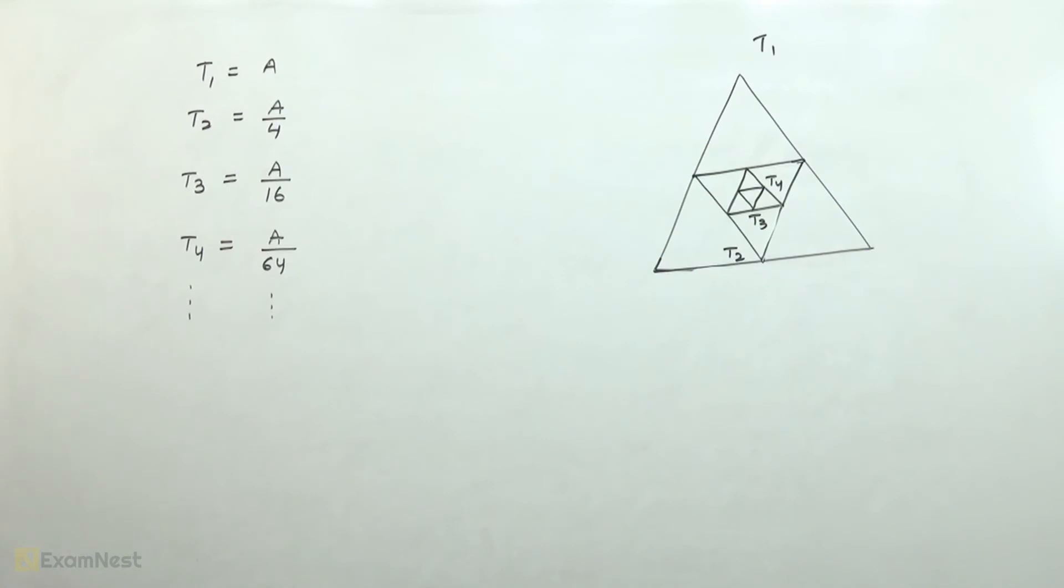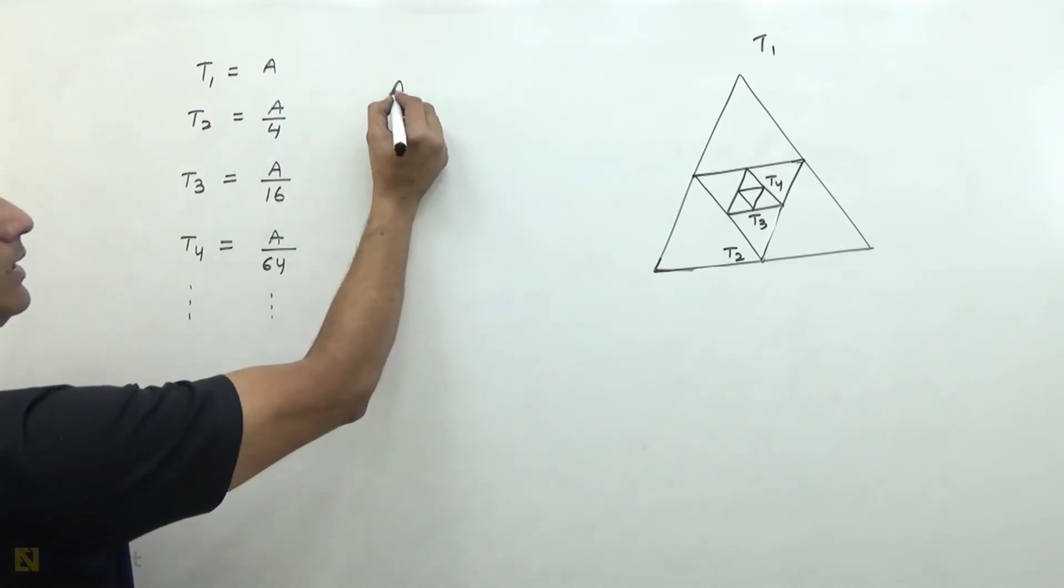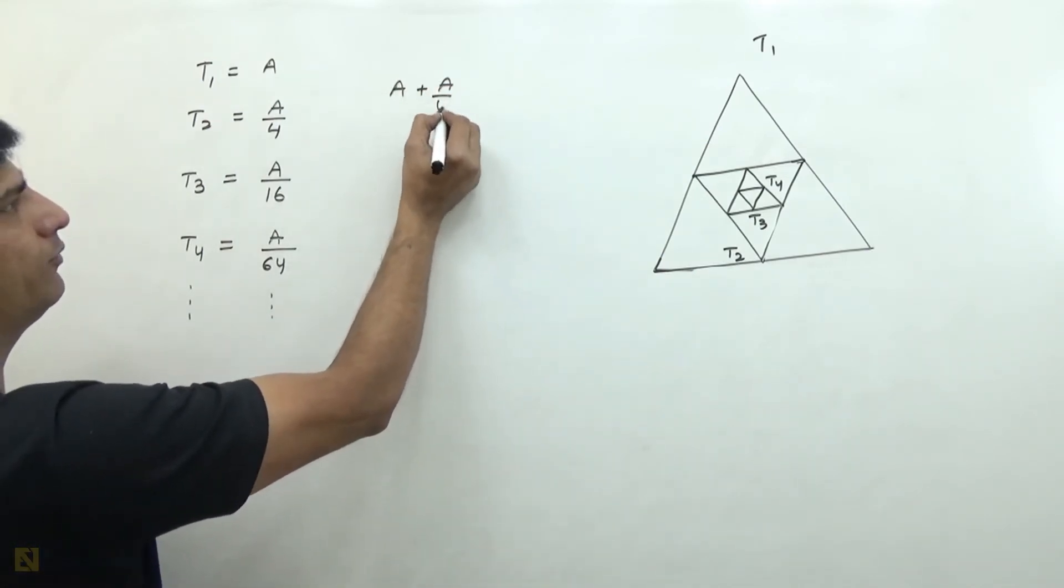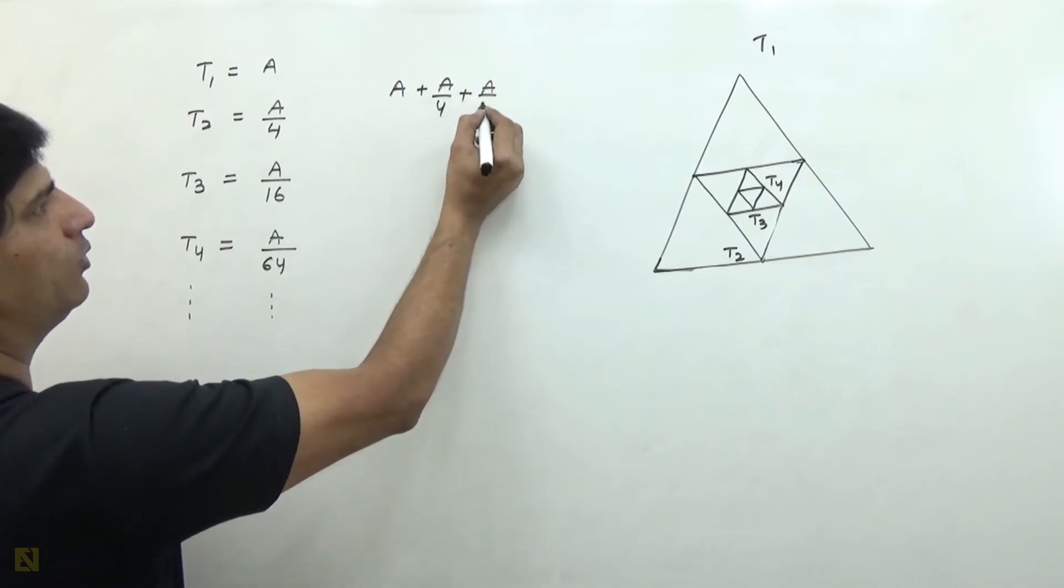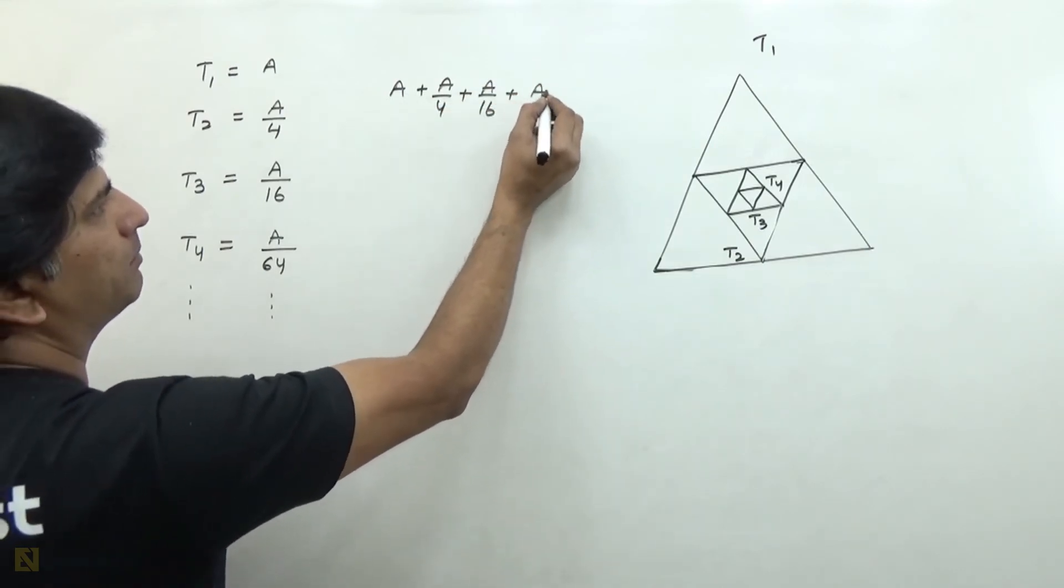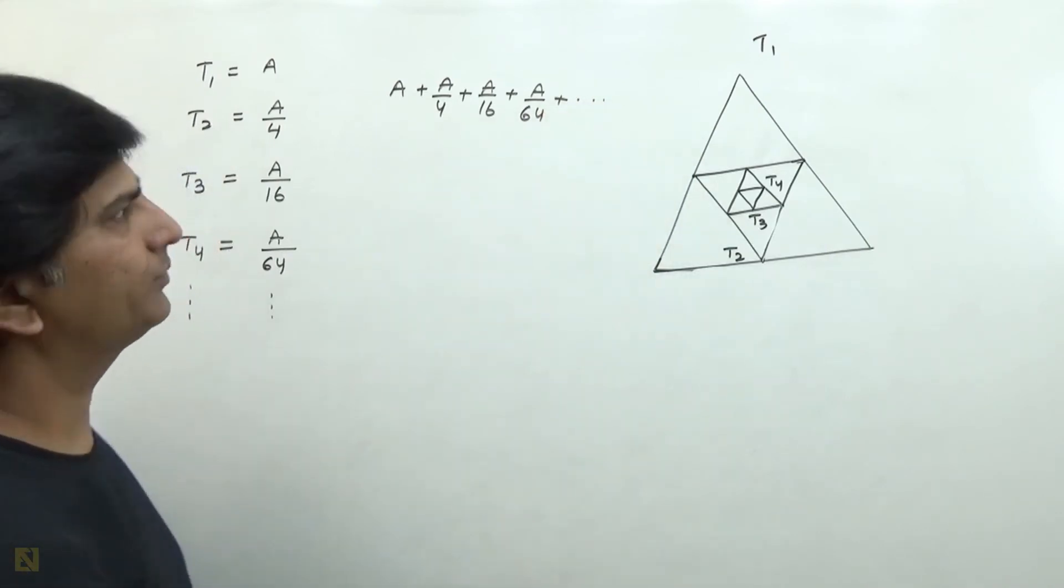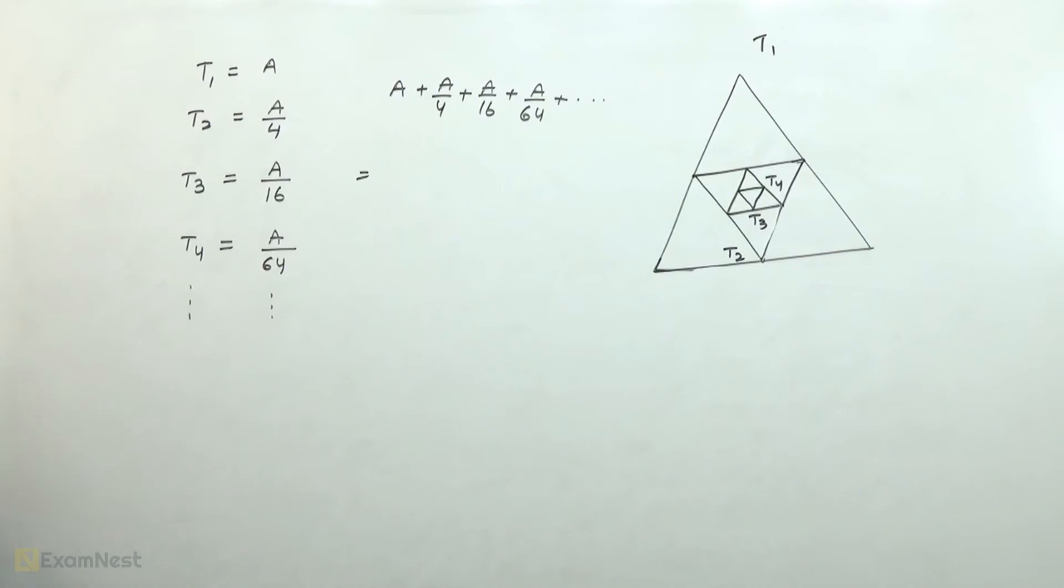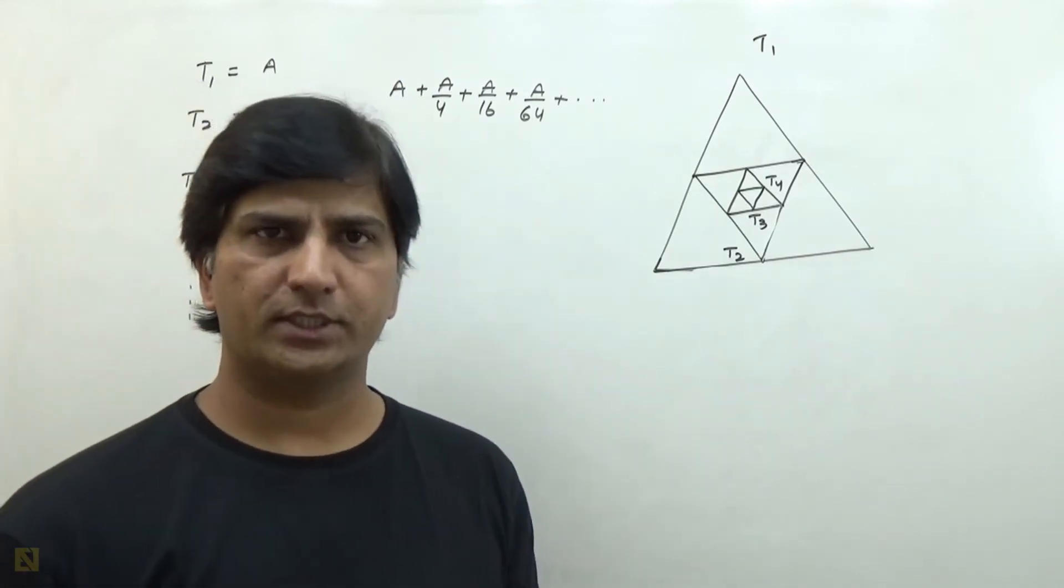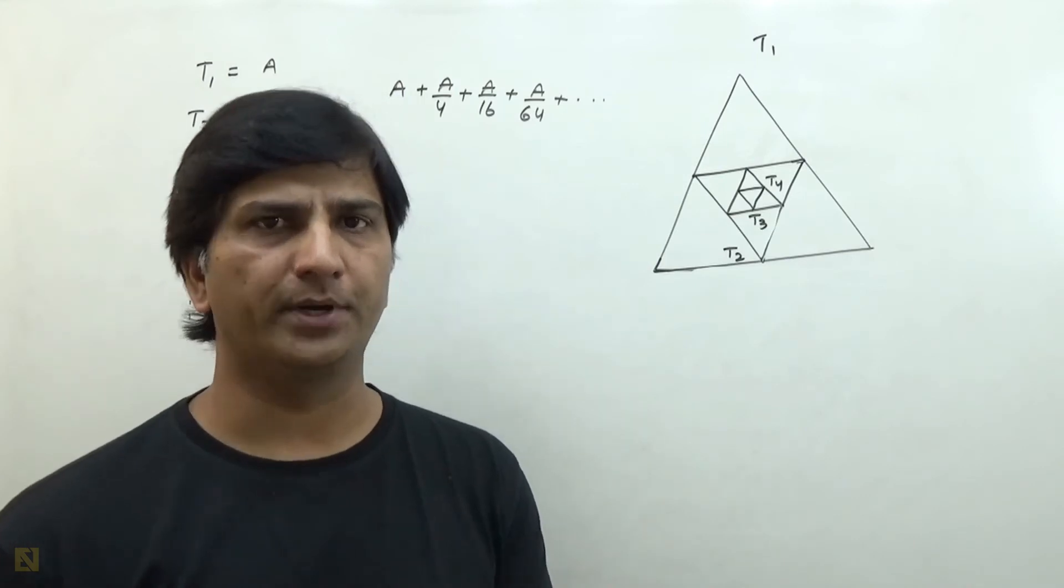If we sum all these areas, we get A plus A over 4 plus A over 16 plus A over 64 and so on up to infinity. This is a geometric progression where the sum of infinite terms formula is first term upon 1 minus common ratio.